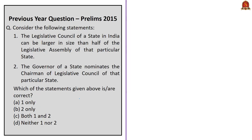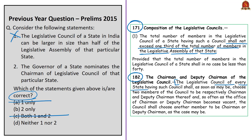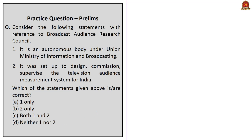This is a previous year question from 2015. With reference to the legislative council of a state, two statements are given. Statement one: a legislative council of a state in India can be larger in size than half of the legislative assembly. This is incorrect — as per Article 171, the total number of members in the legislative council shall not exceed one-third of the total number of members in the legislative assembly. Statement two: the Governor of a state nominates the chairman of the legislative council. This is also incorrect — as per Article 182, the legislative council chooses two members to become chairman and deputy chairman respectively. The correct answer is option D: neither one nor two.